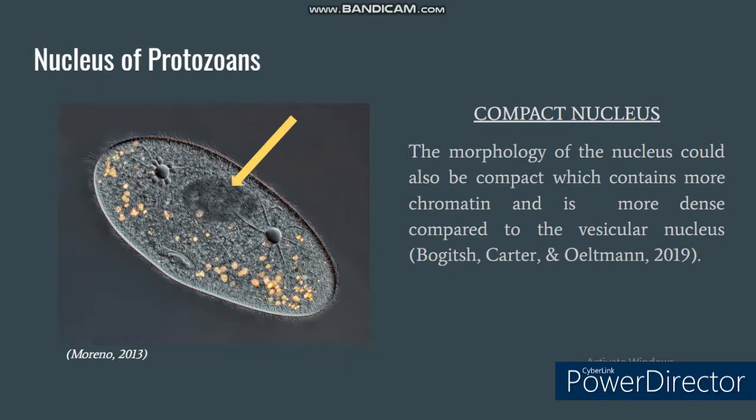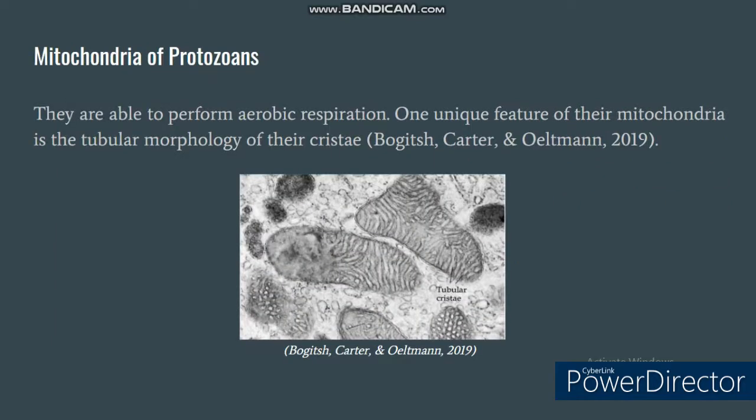For compact nucleus, they are described to contain more chromatin and are more dense compared to the vesicular nucleus. This compact nucleus plays a role in sexual reproduction of ciliophorans. As mentioned earlier, protozoans have complex internal structures, and one of these is their mitochondria, which allow them to perform aerobic respiration. One unique feature about their mitochondria is the tubular morphology of their cristae, which can be observed from the figure below.